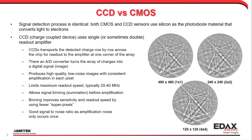This limits the maximum readout speed to somewhere around 20 to 40 megahertz. It allows signal binning or summation of charge before the amplification process. Binning improves the sensitivity and readout speed by using fewer pixels — what we typically call super pixels. We can see full resolution patterns, two-by-two and four-by-four binning, showing how the resolution decreases but intensity increases. We get good signal-to-noise since amplification noise occurs only once in the readout process.